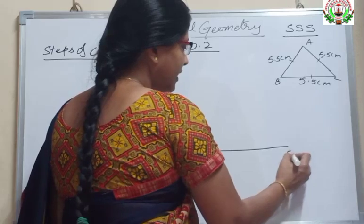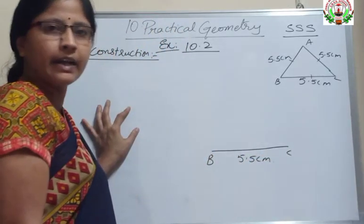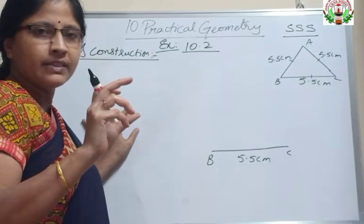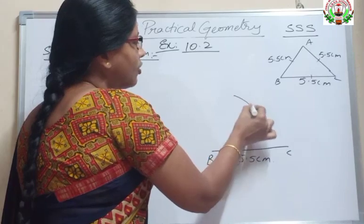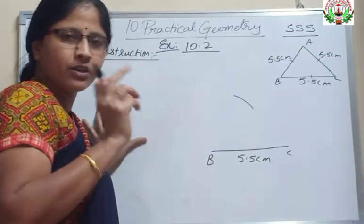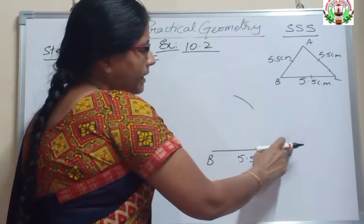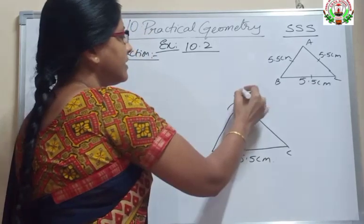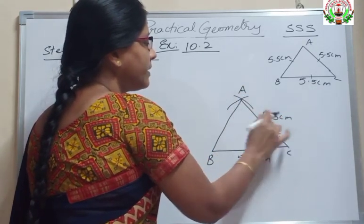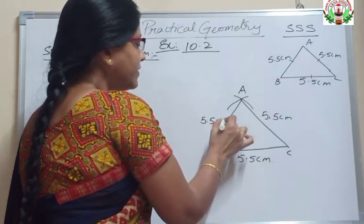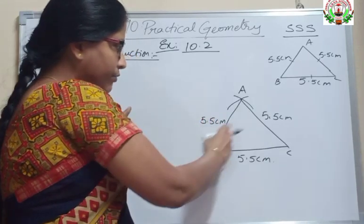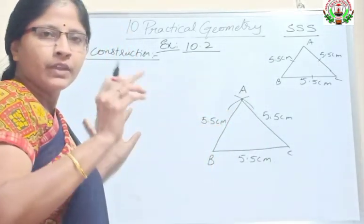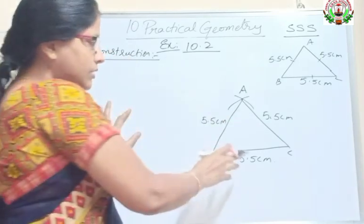Next, with the help of a rounder, measure 5.5 cm, keep the metal point at B and draw an arc. Next, with that same measurement — because it is an equilateral triangle all three sides are equal — keep the metal point at C and cut this arc. Join the points to B and C. So this is A. Here 5.5 cm and here 5.5 cm. This is the equilateral triangle that we have to construct. My figure is not accurate because I am drawing it freehand; when you draw using your ruler and rounder your figure will be accurate.